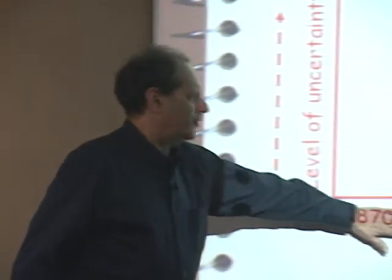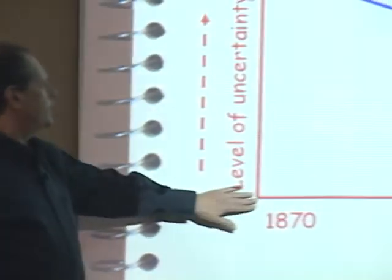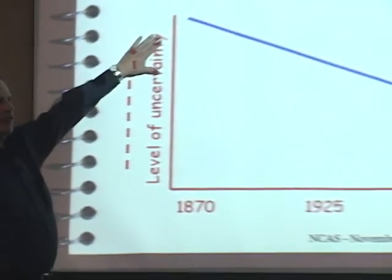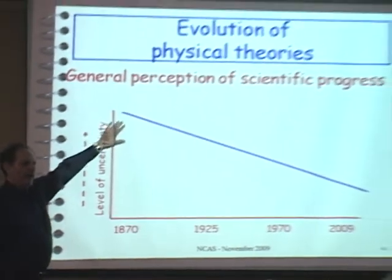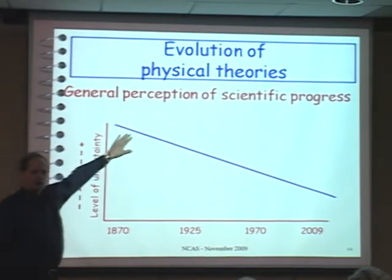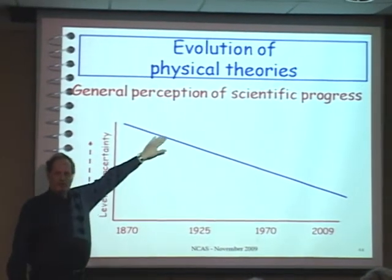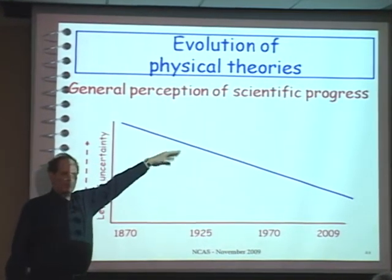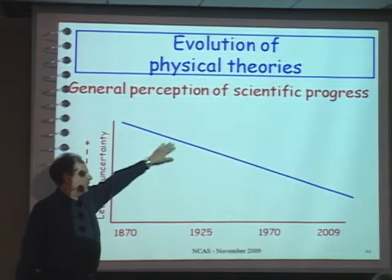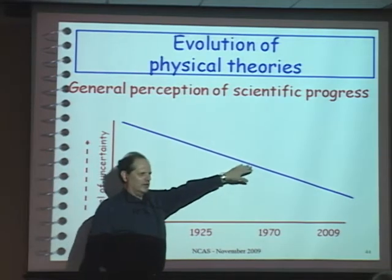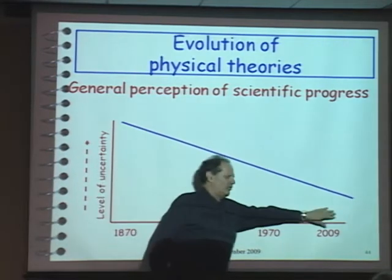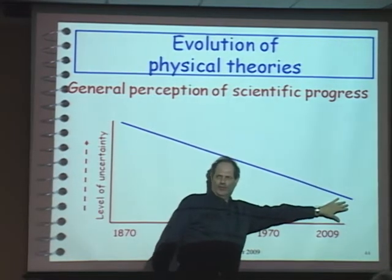We start at the beginning with a lot of uncertainty about what your theory is doing. And as you chug along generating papers, generating results, with more and more scientists, you get closer and closer to certainty. We know what the theory is.